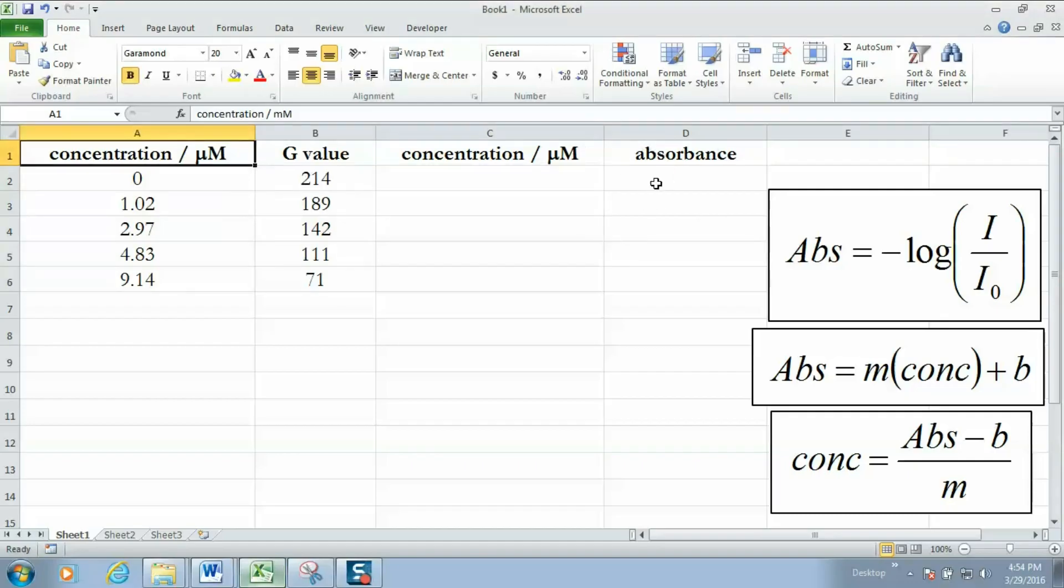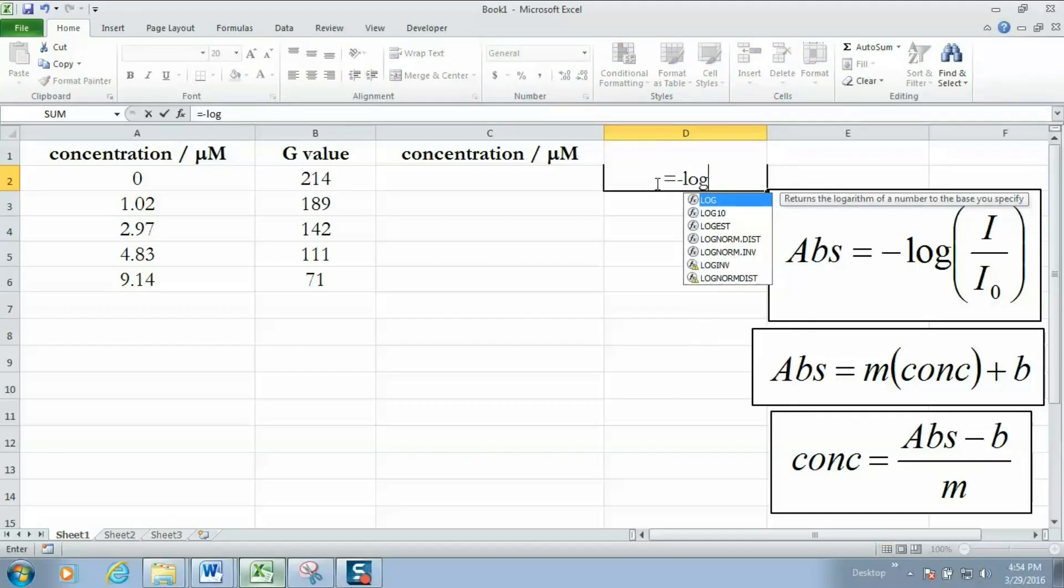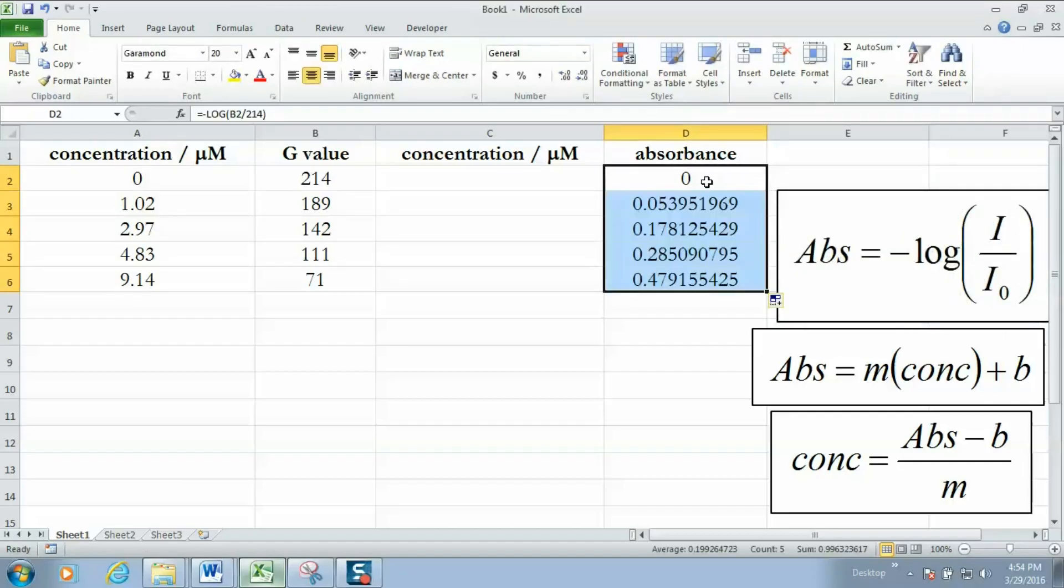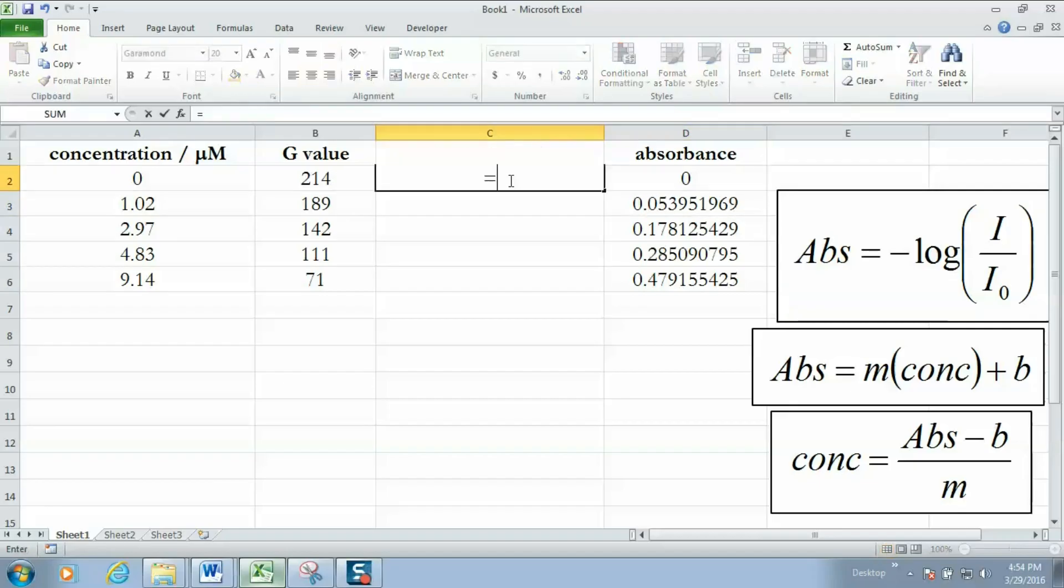I'm going to highlight this cell and I'm going to type equals minus log parenthesis. I'm going to click cell B2 to indicate I want that particular G value divided by the intensity of the blank or the green value of the blank which is of course 214. And I'm going to go ahead and do the same in all these columns. The quickest way to do it is just to fill down. So in this column here we've taken the negative logarithm of 189 over 214. In this column I've taken the negative logarithm of 142 over 214 and so forth. I'm just going to put the corresponding concentrations immediately to the left, that just makes it easier to graph.